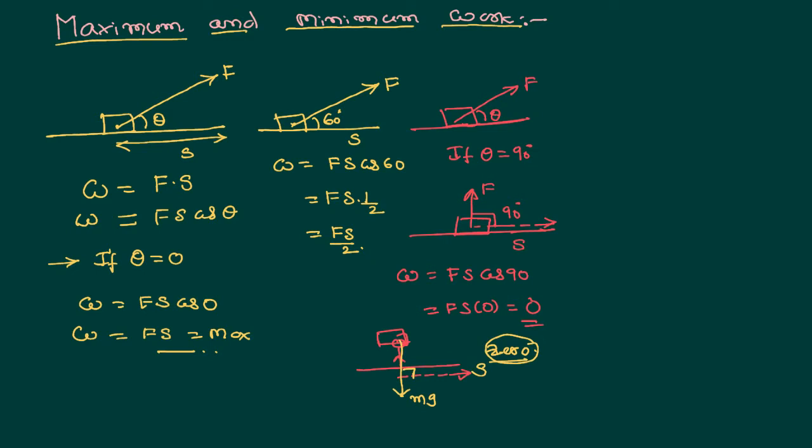So work done equals 0 when the force and displacement are acting at right angles to each other.